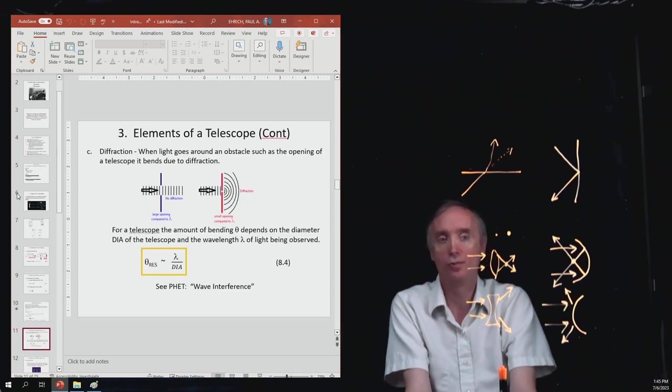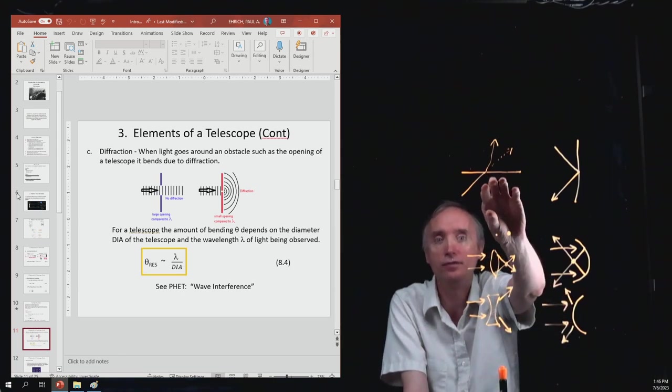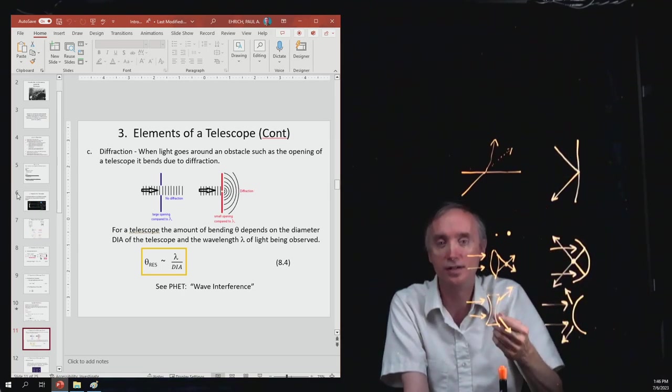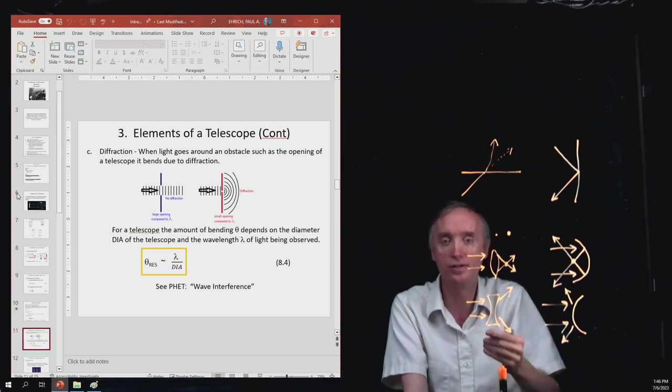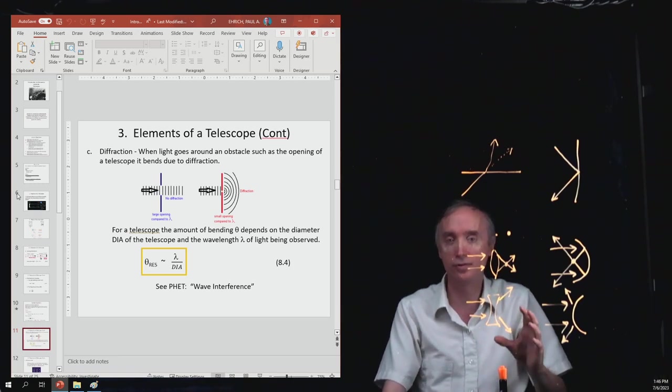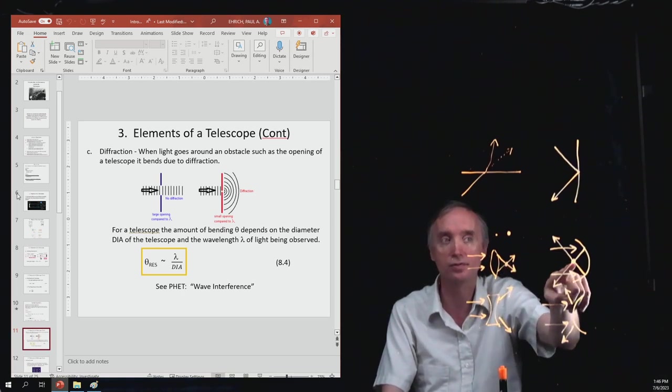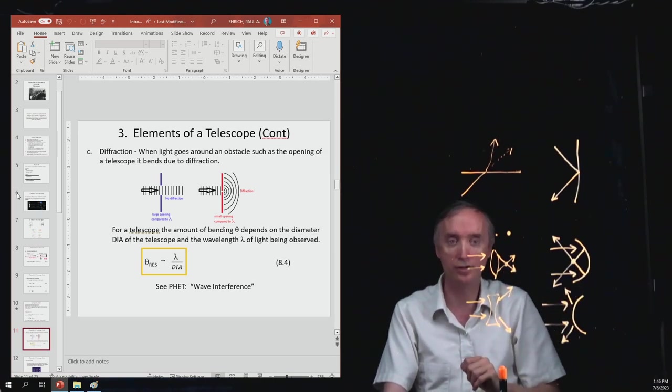Now there is a third way of changing the direction of light. We said here refraction, this one's reflection. The third method is called diffraction. And diffraction is bad. You do not want to have diffraction in your telescope because it's going to alter the direction that the light is traveling, which means that it won't come to a focus like it's supposed to, which means that your star is going to look blurry. And you don't want that to happen.